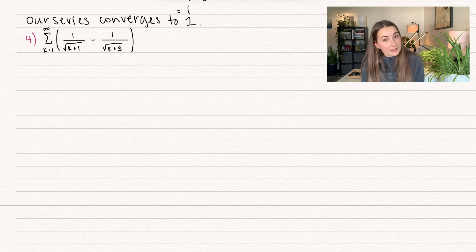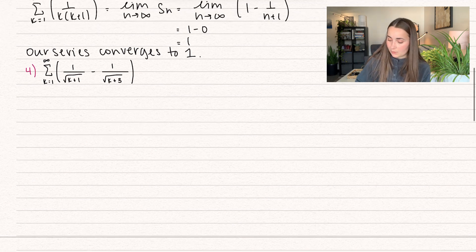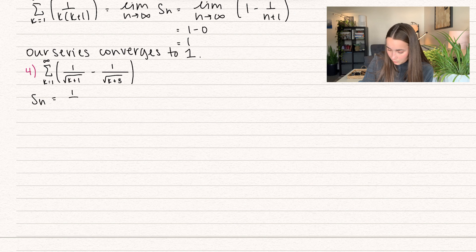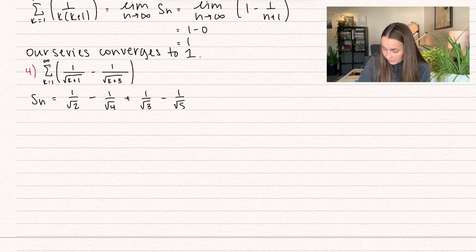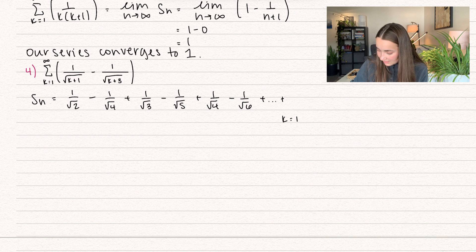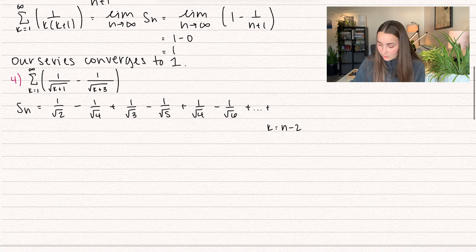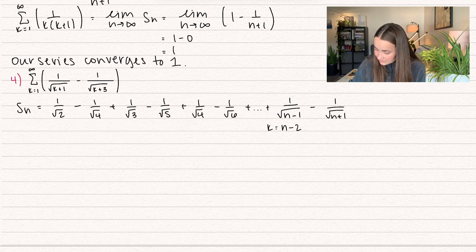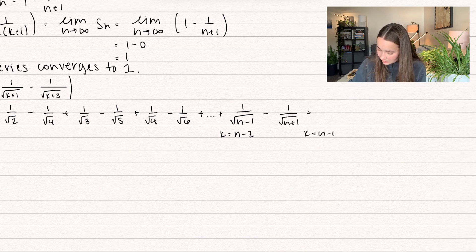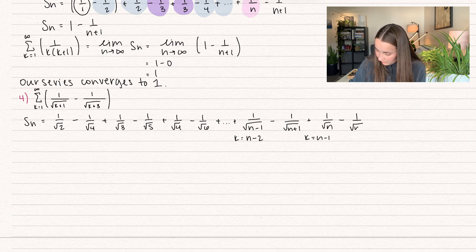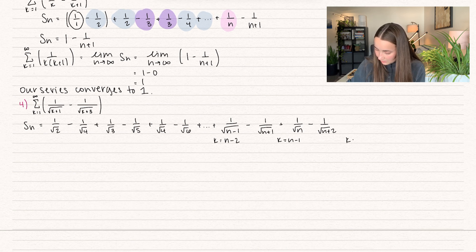We have one more — we don't need to manipulate this one, but it's a little more complicated. Let's take a large partial sum. For k=1: 1 over √2 minus 1 over √4. For k=2: 1 over √3 minus 1 over √5. For k=3: 1 over √4 minus 1 over √6. Going down to k equals n minus 2: 1 over √(n-1) minus 1 over √(n+1). For k equals n minus 1: 1 over √n minus 1 over √(n+2). And for k equals n: 1 over √(n+1) minus 1 over √(n+3).